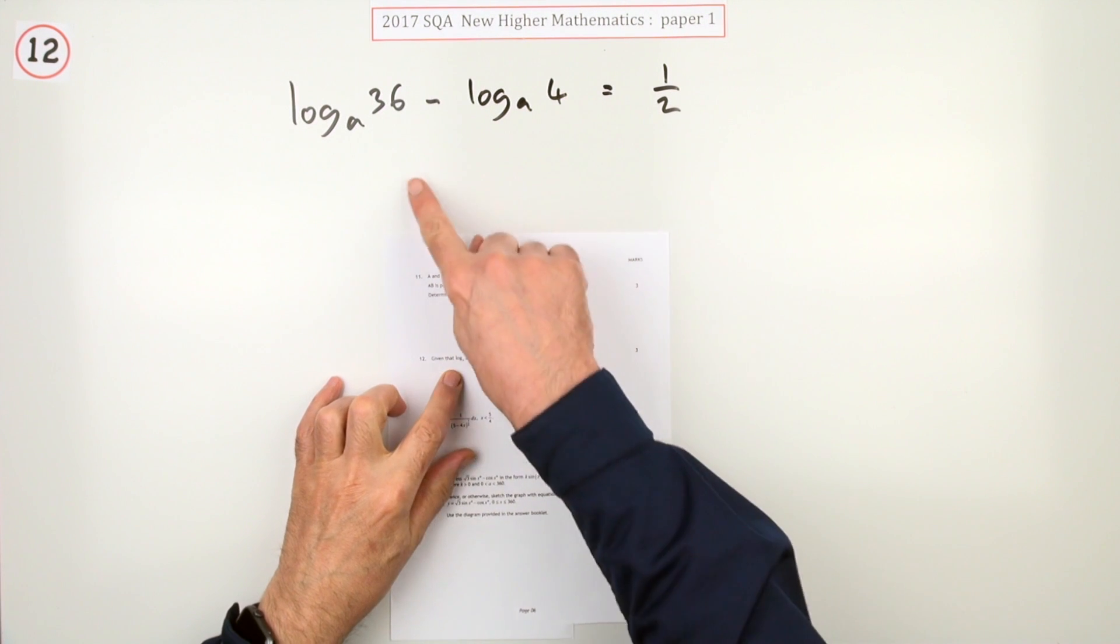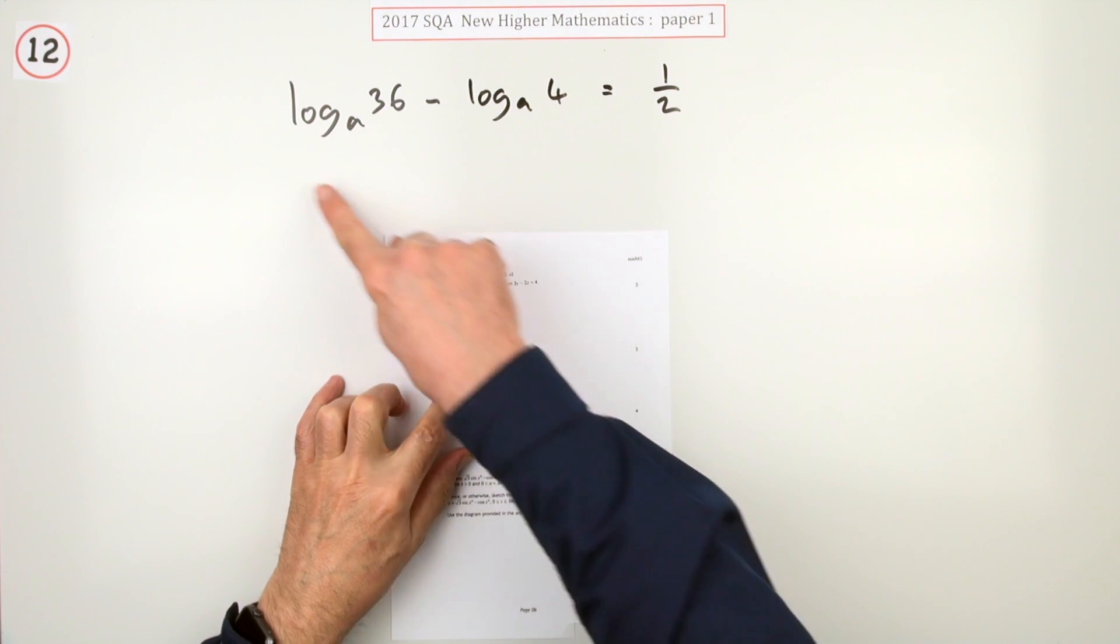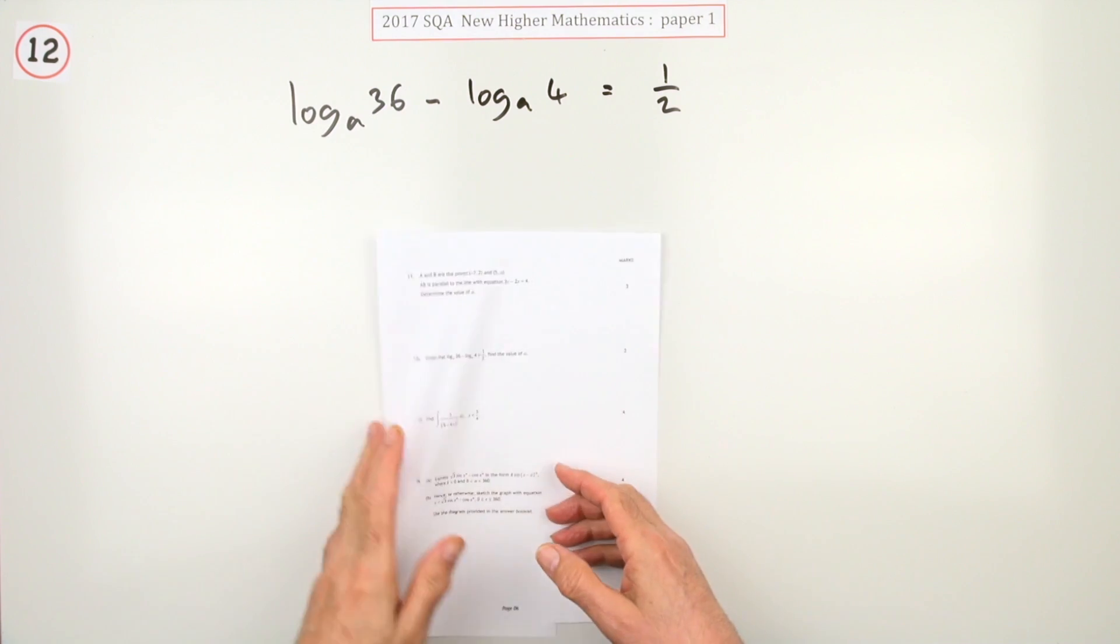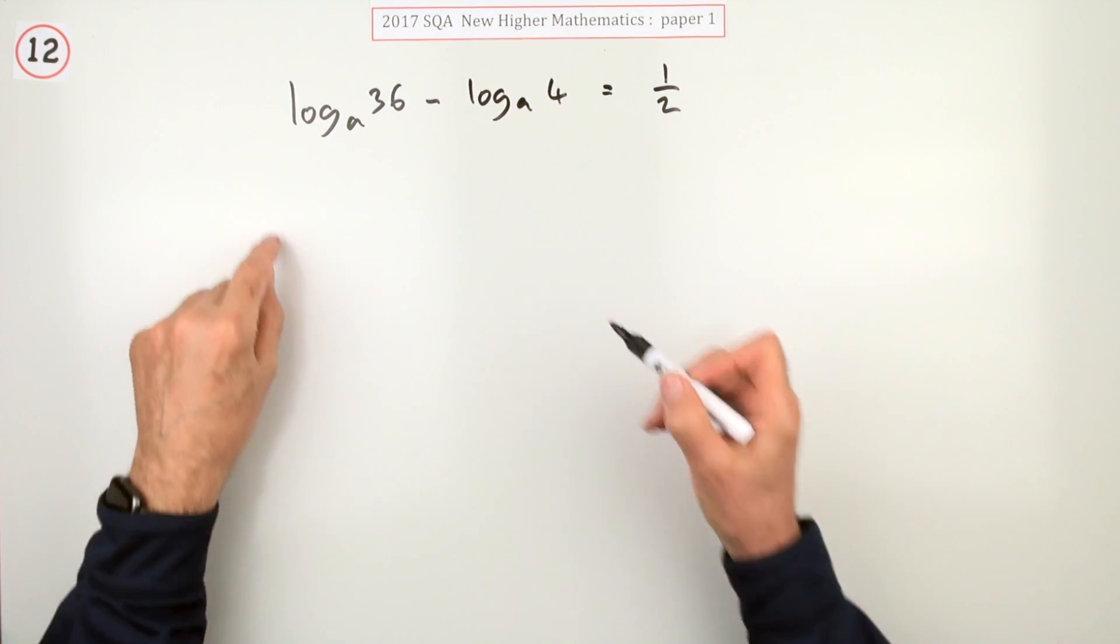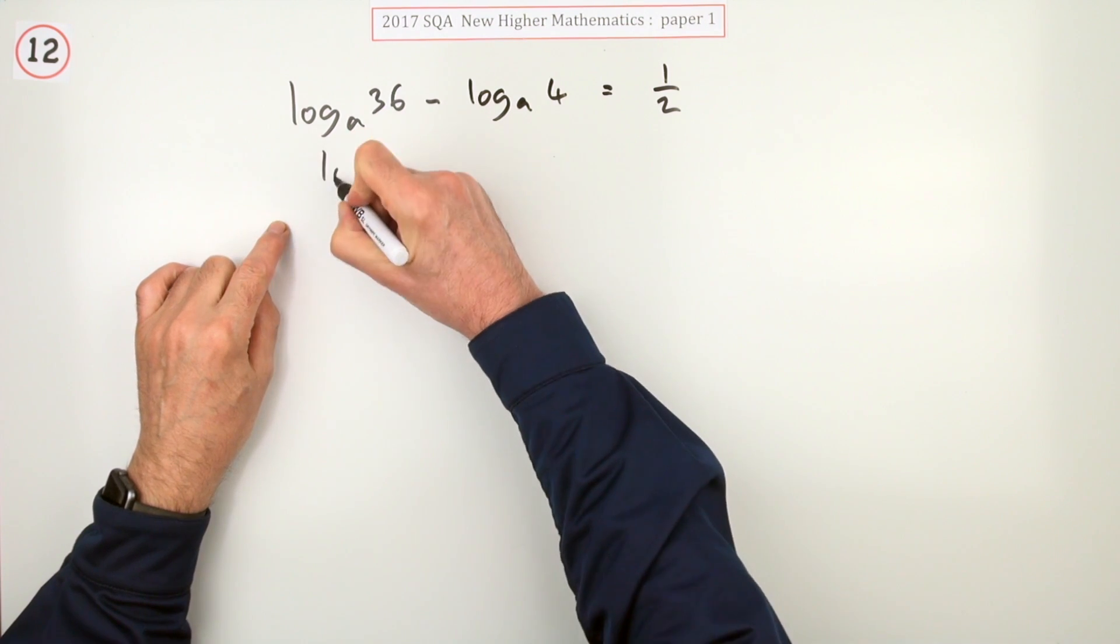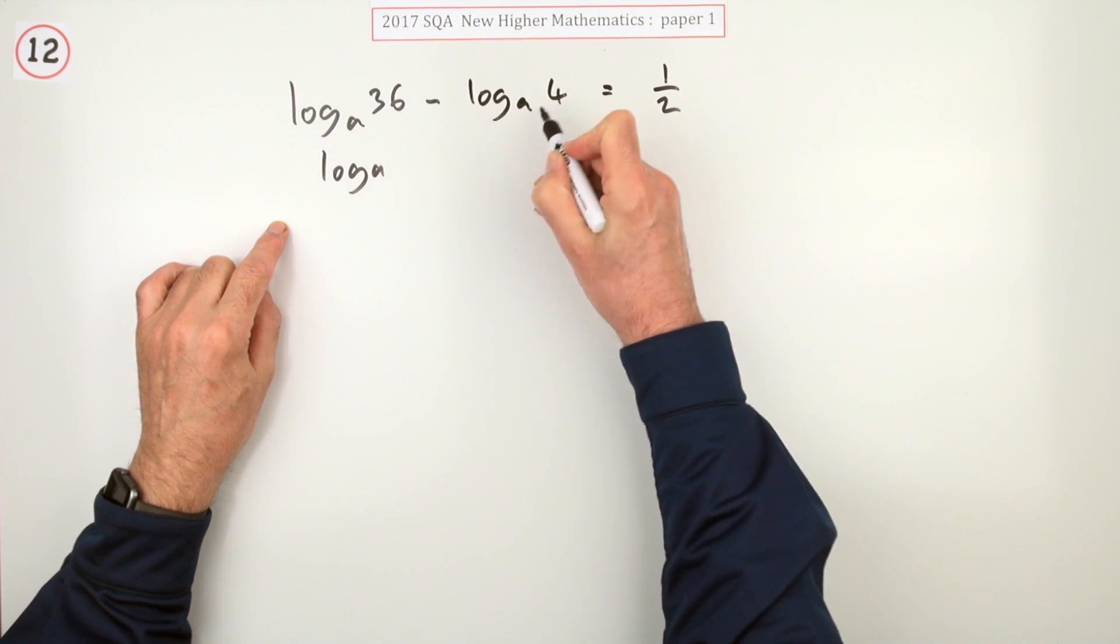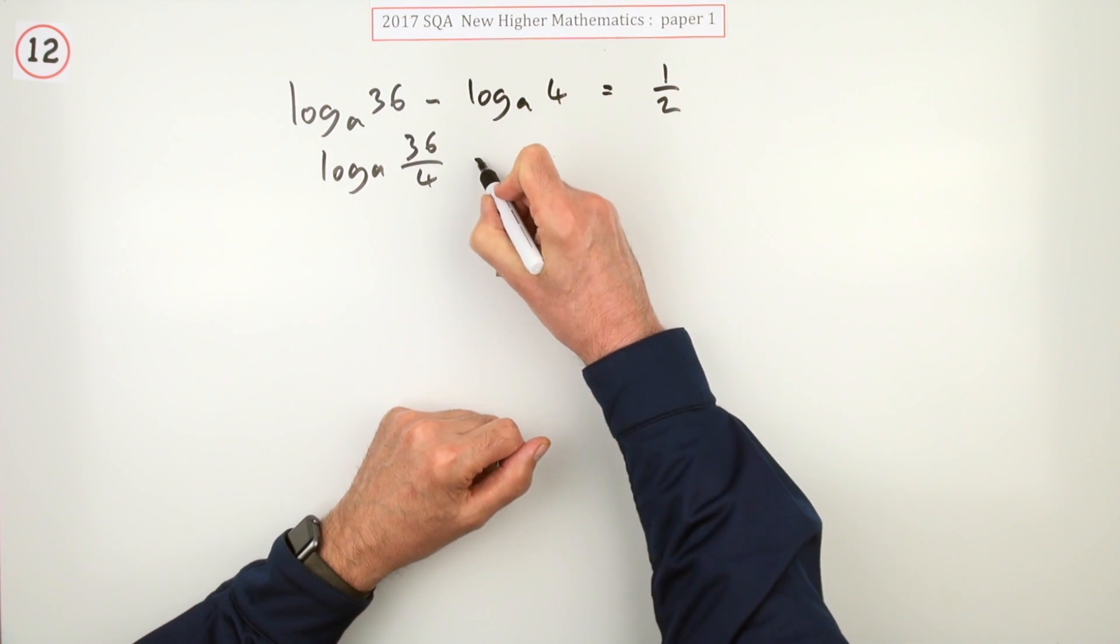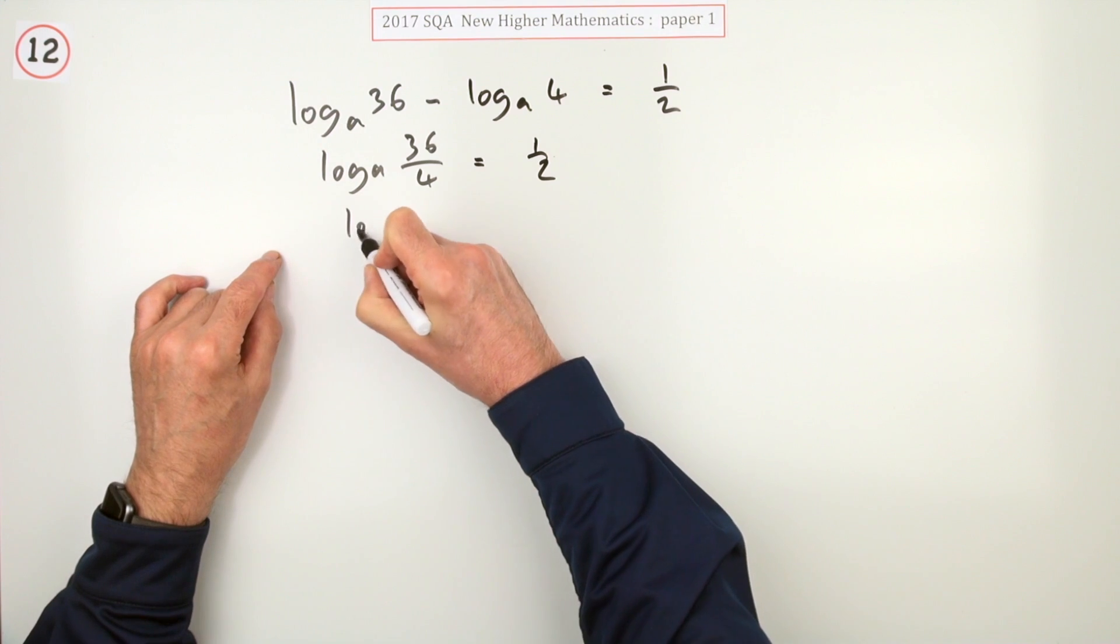Number 12 will be your log question for three marks. Given this little equation, find the value of a, the base of the logarithm. Well, the first step is you could join them together. If you're subtracting the logarithms, then that will be the logarithm of the quotient, dividing the operands there, so that should equal a half.